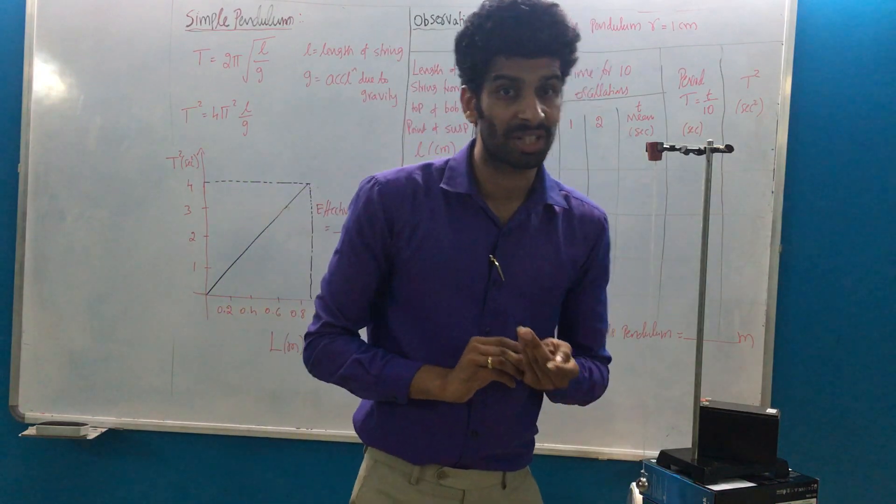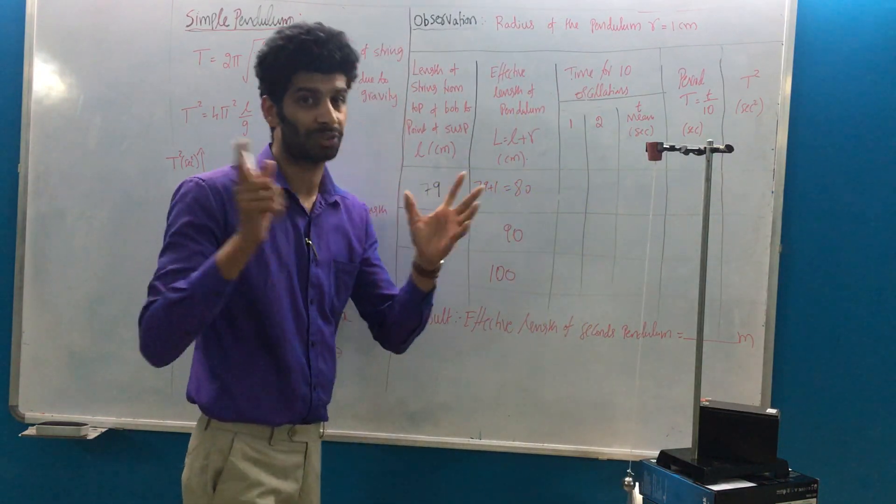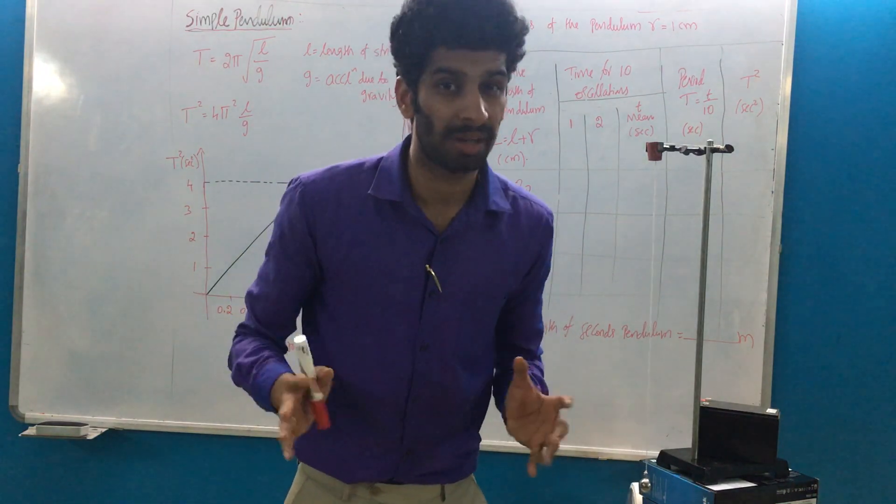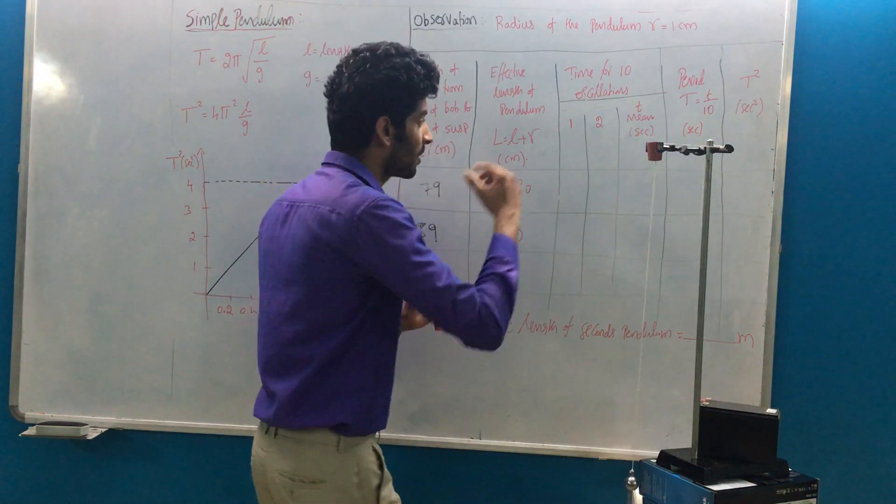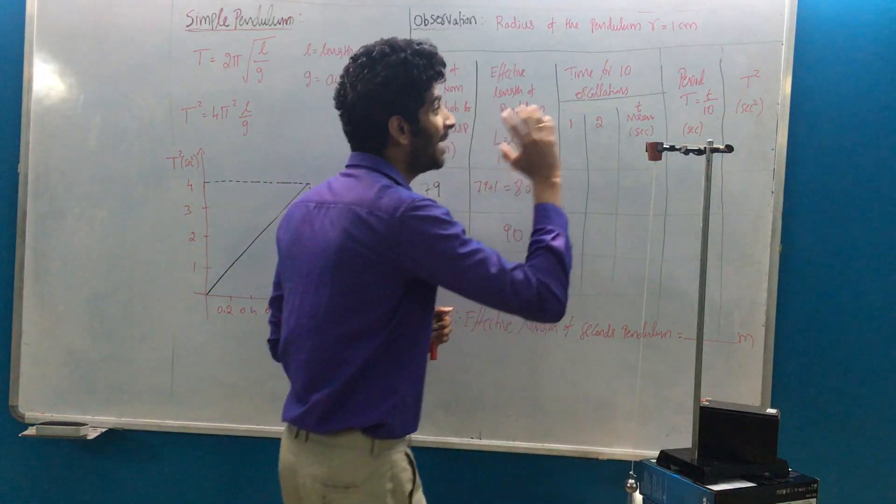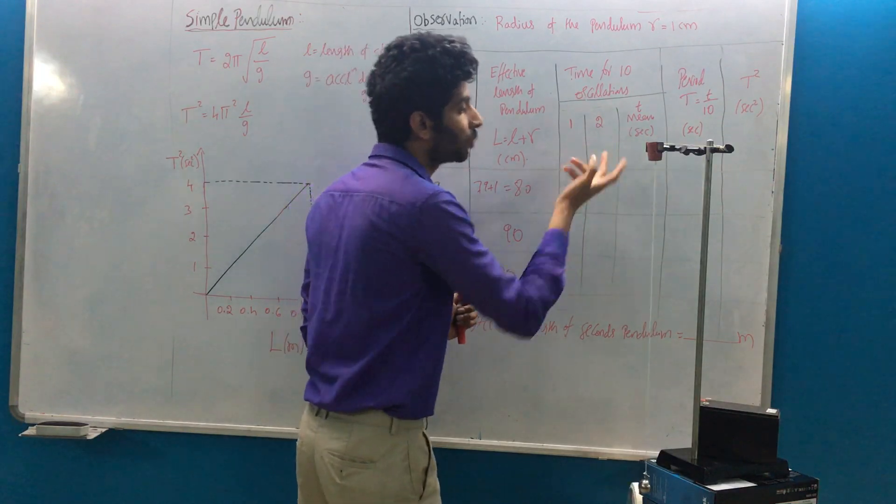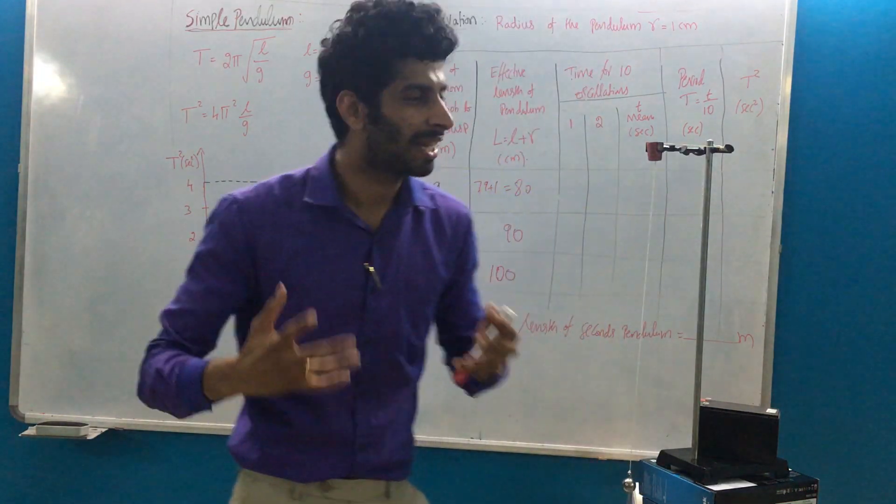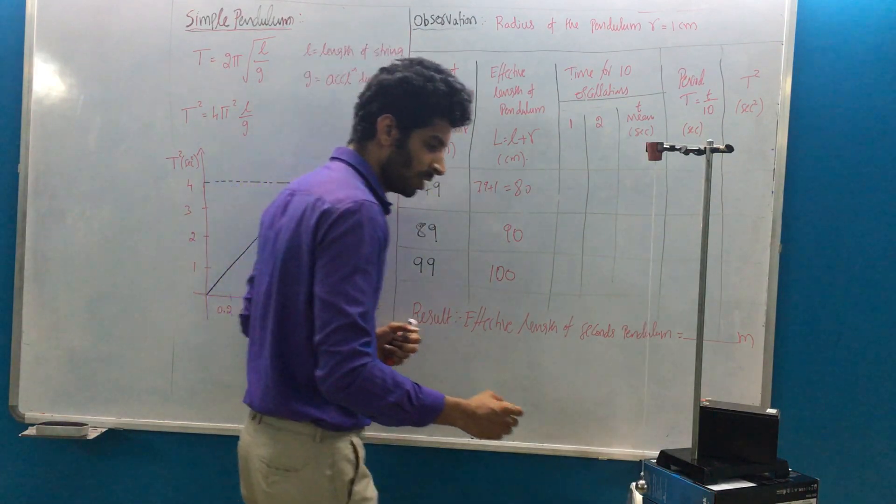Now what I have to do is find out what is the time period for one oscillation. If you go for only one oscillation we may get more error, and if you go for only one trial there is more possibility of getting error. That's why we go for ten oscillations as well as two trials, so that we can minimize the amount of error we get in the experiment.